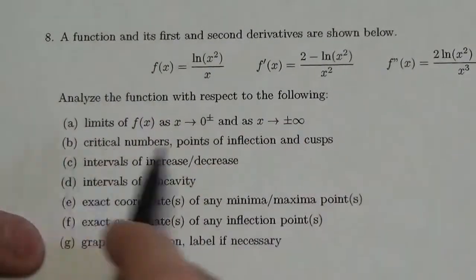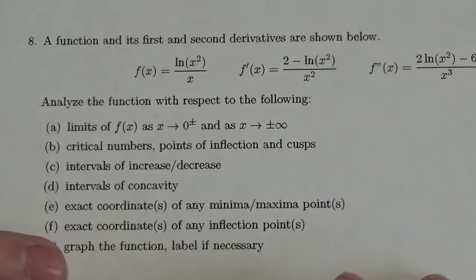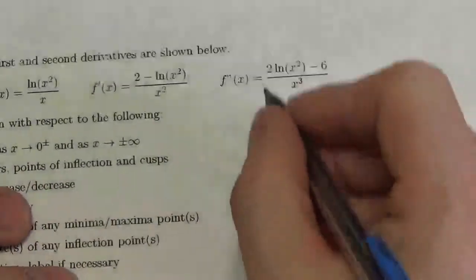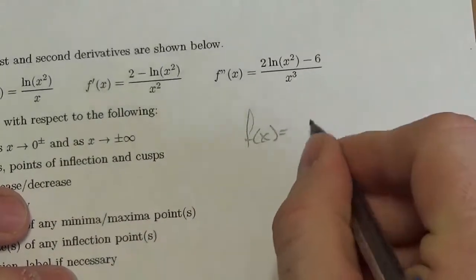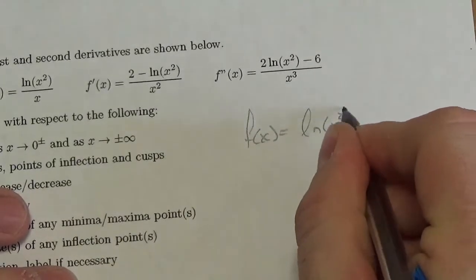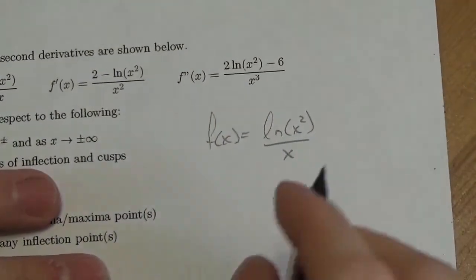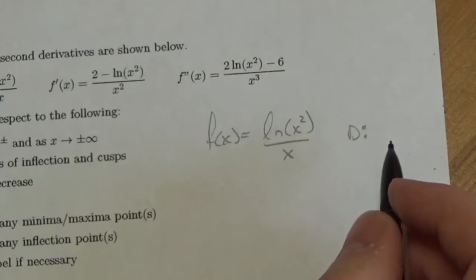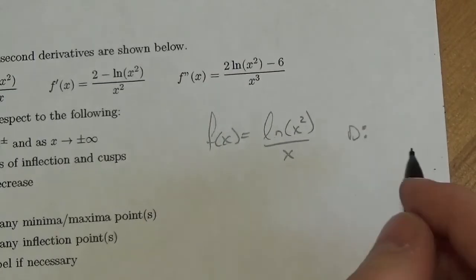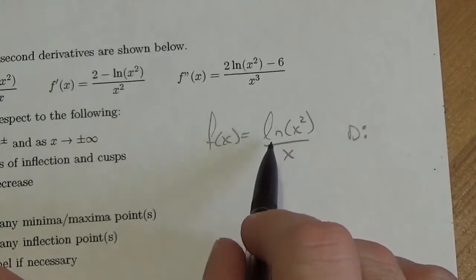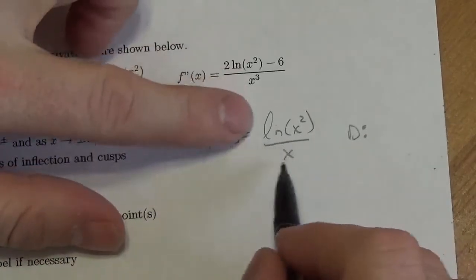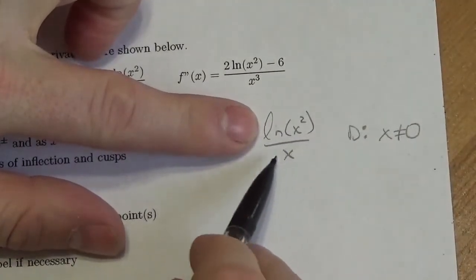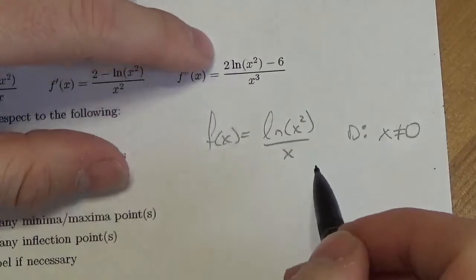Before we get into the limits, we should take a quick look at the original function. So f(x) equals the natural log of x squared over x, and it's going to be helpful to determine the domain. We know that x can't be zero because of the division by zero right here — that's an easy one.